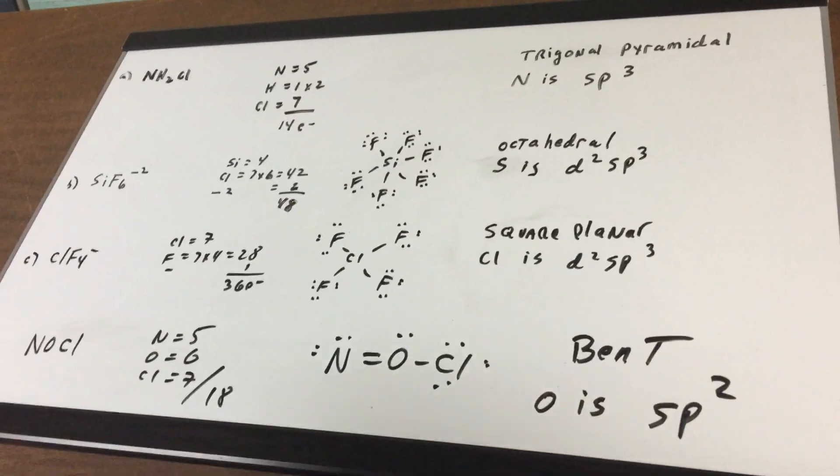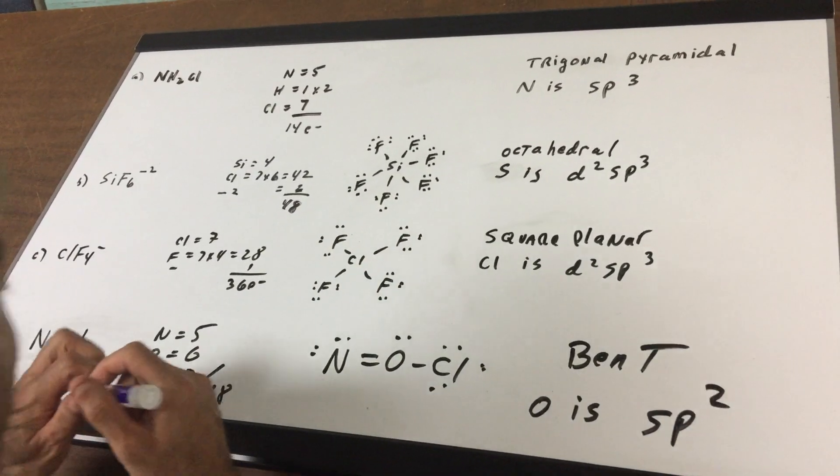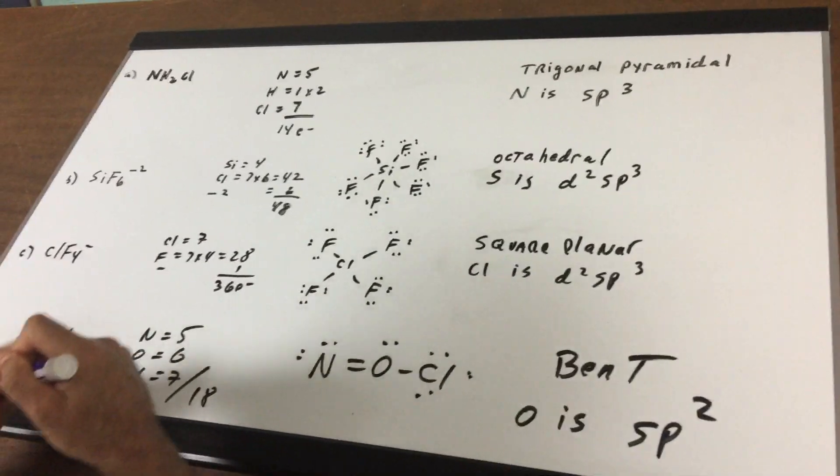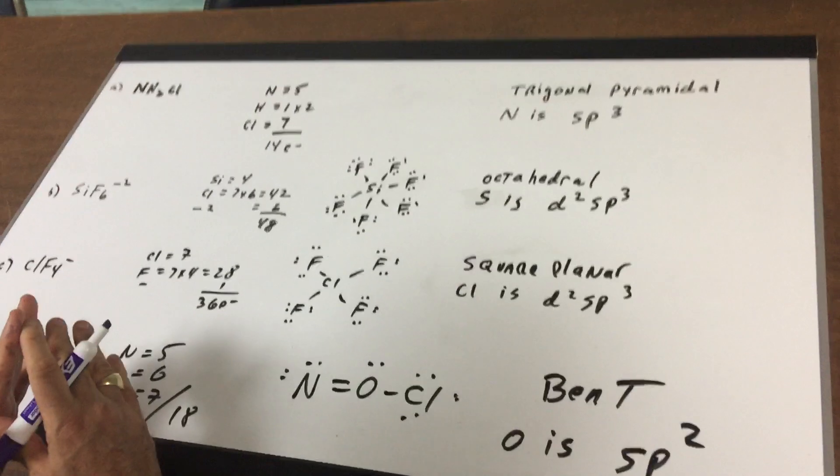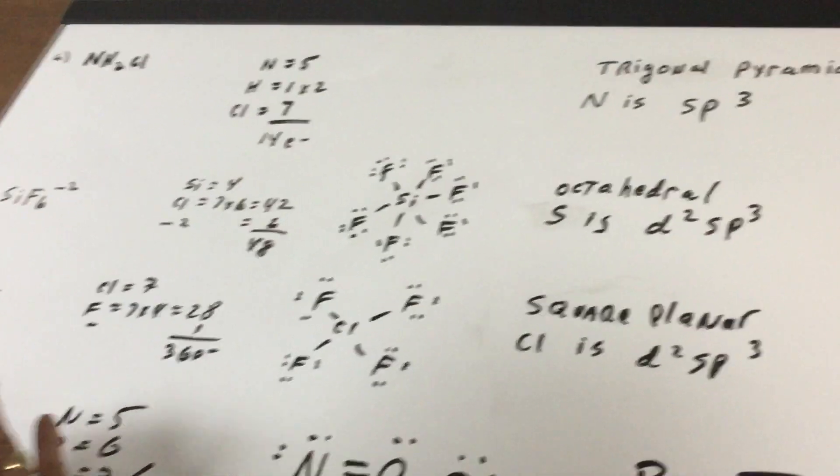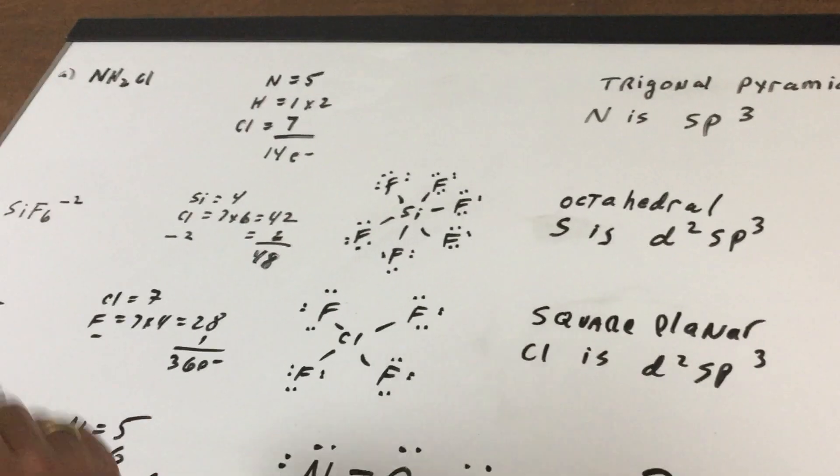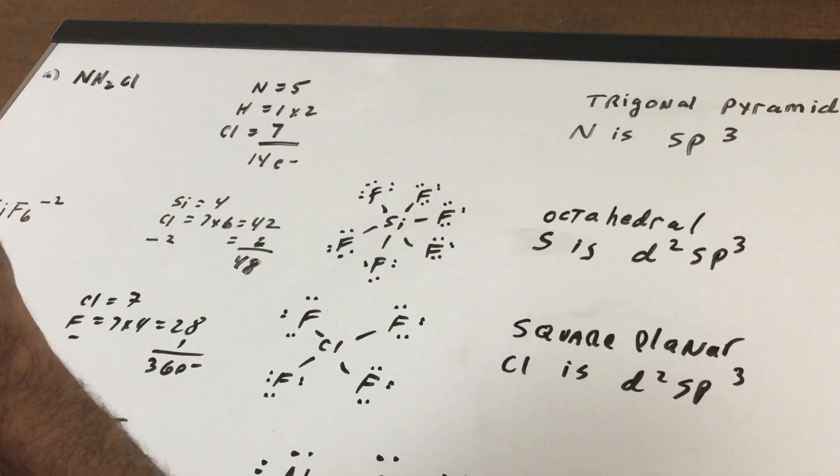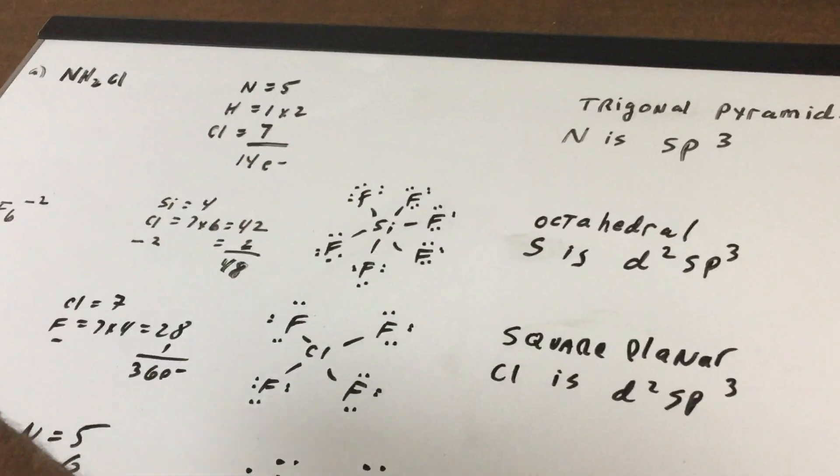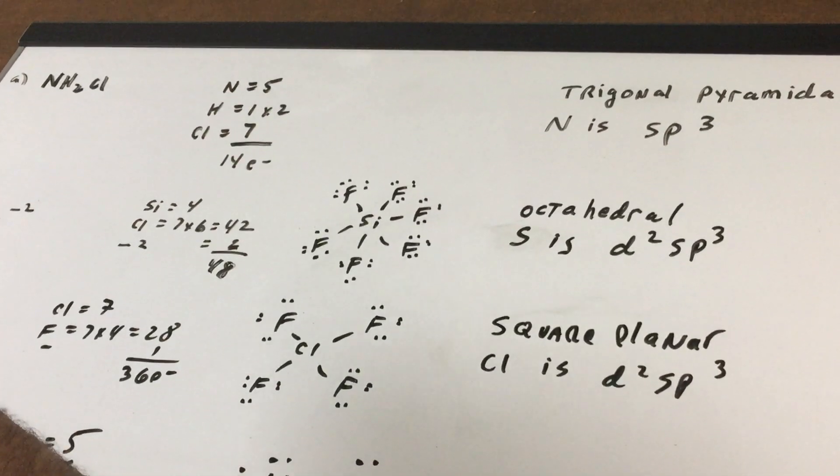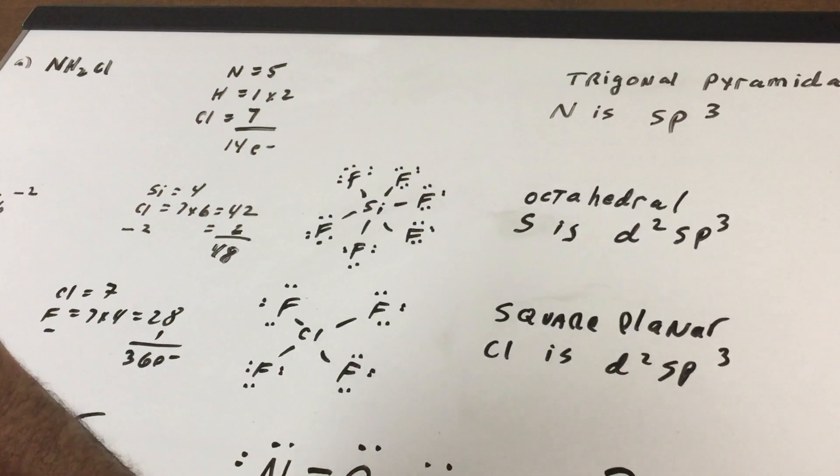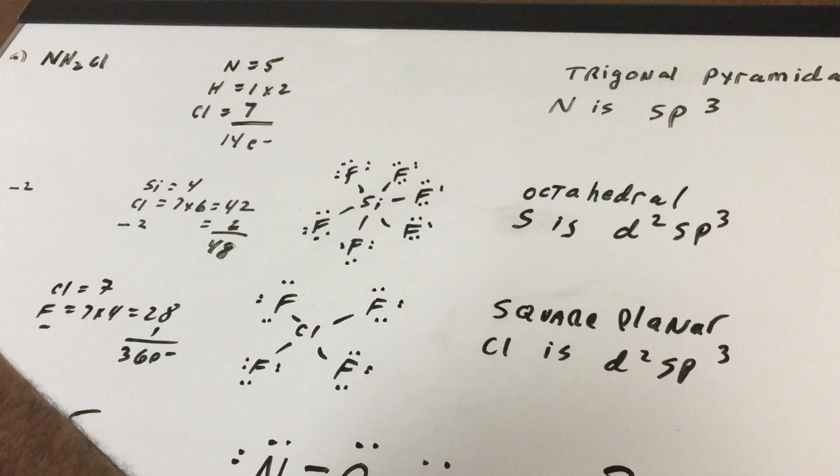We're going to do four examples. Now I give you NH2Cl. The first thing we want to do is count the total number of valence electrons. Now nitrogen is in group 15 on your periodic table, but we're going to put our finger over the one and pretend those groups are group five. So nitrogen would be from group five.